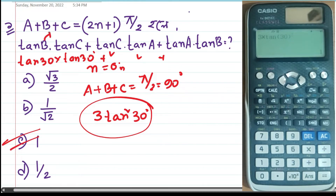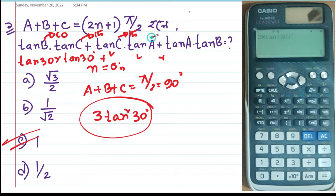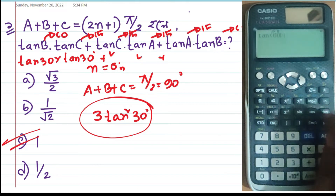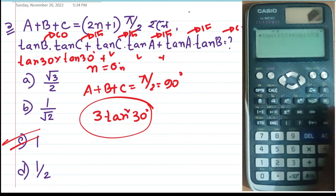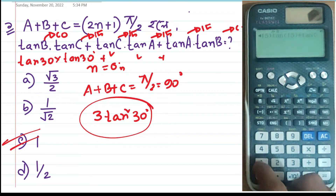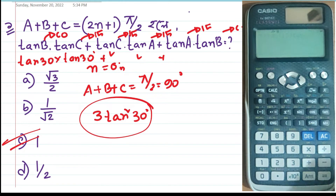So, b is 60, c is 15, a is 15, b is 60. So tan 60 plus tan 15 plus tan 15, then tan 15, then tan 15, then tan 16 gives 1. What is the combination of the values?